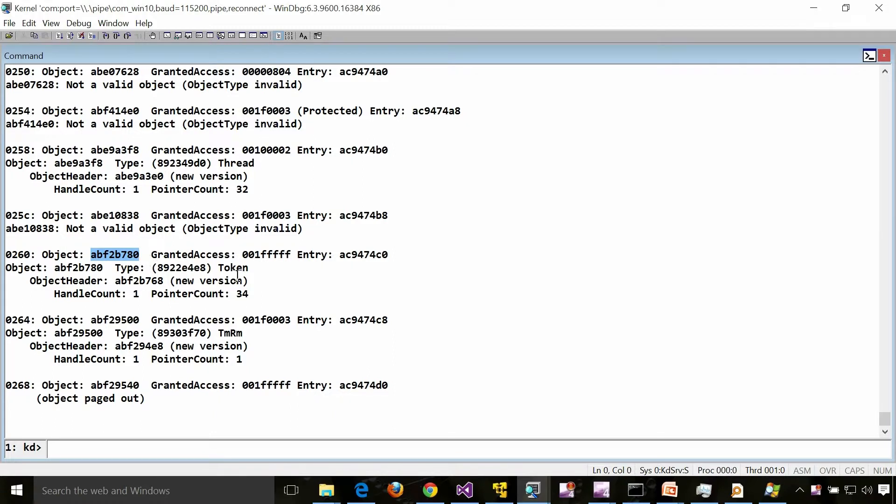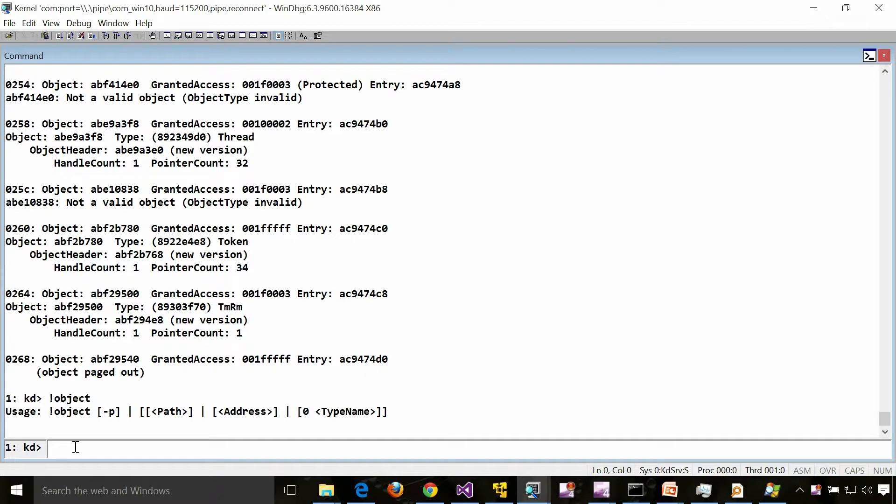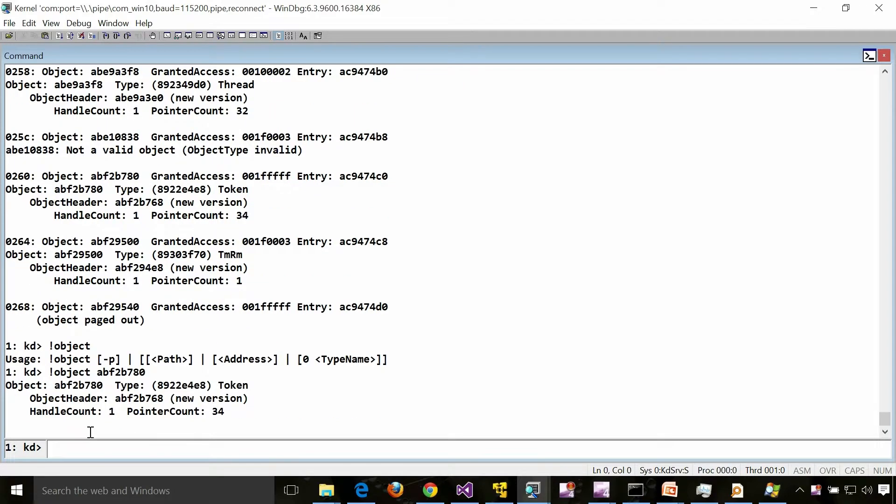For example, in this case it is a token. So you can do a !object. Its type is a token so you can do a !token as well.